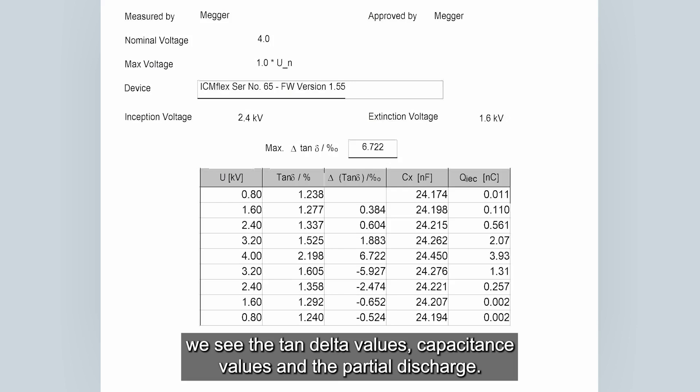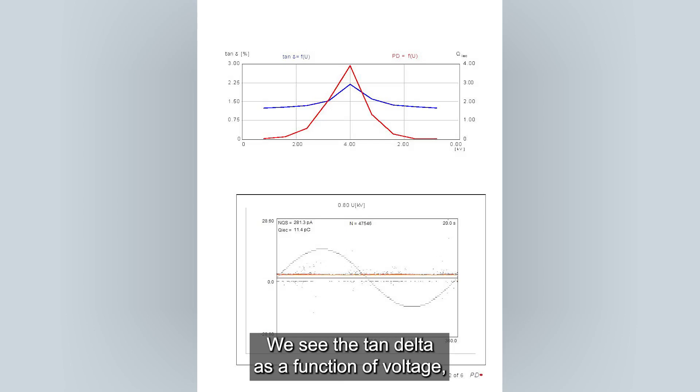We see the tan delta values, capacitance values and the partial discharge. We see the tan delta as a function of voltage and partial discharge value as again function of voltage. And then the first phase result partial discharge pattern at the first voltage level, which was 0.8 kV. That was taken for 20 seconds, which is basically only the background noise.